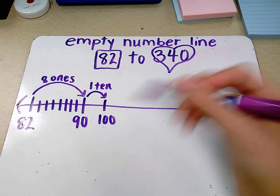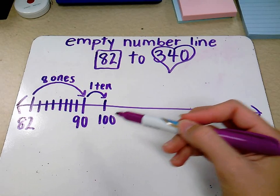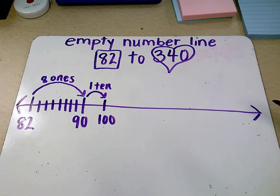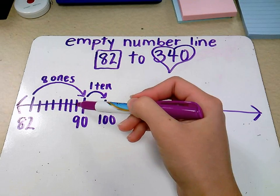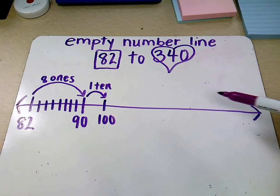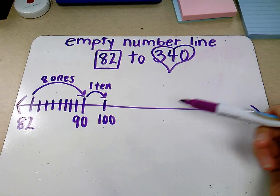But why did we stop at 100? Well, when we get to 100, we can now add faster by adding hundreds. Ones take a long time. Tens take a long time. Hundreds are really, really fast. We get to our hundred. Now let's add by hundreds.